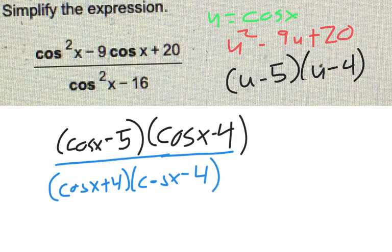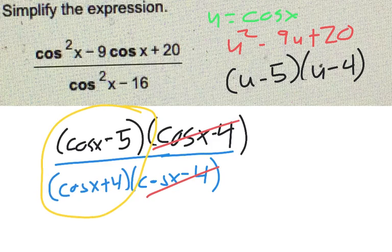Now everything is factored, and I have a common factor in the numerator and the denominator that will cancel out, which means my final answer would just be cosine of x minus 5 over cosine of x plus 4.